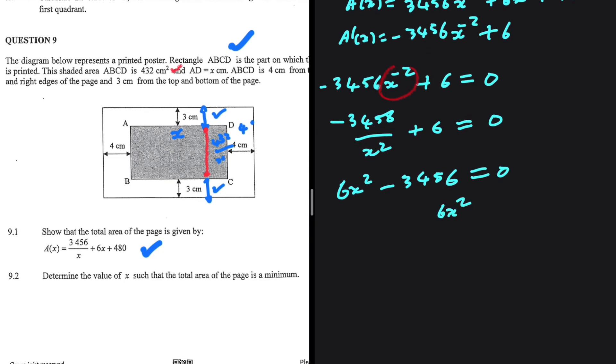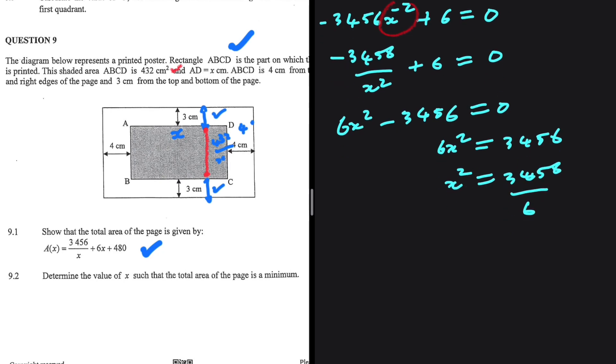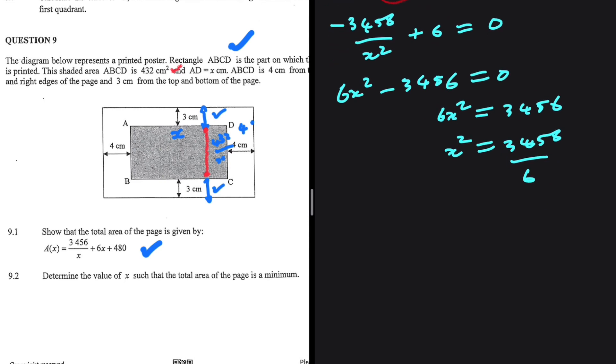So 6x² = 3456, which means x² = 576. Taking square roots, x = 24 or x = -24.